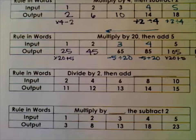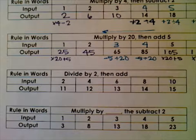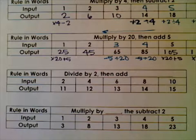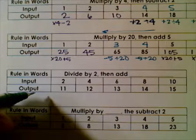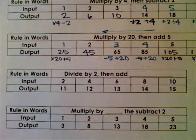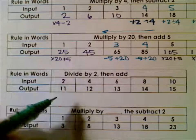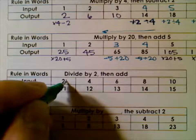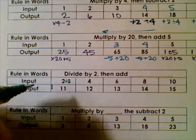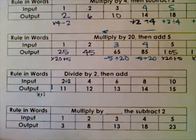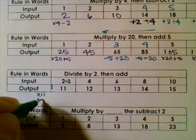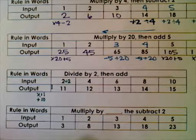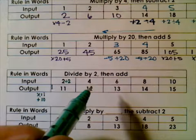The next problem says: the rule is divide by 2, then add blank — so we don't know the full rule yet, but we have input and output completed. If the input is 2 and output is 11: 2 divided by 2 is 1. To get to 11, I can add 10. Let's try input 4: 4 divided by 2 is 2. To get to 12, I can't multiply by 11 — that gives 22 — but I can add 10.